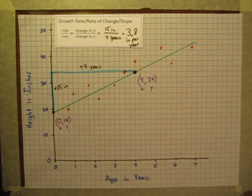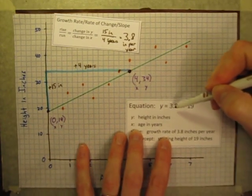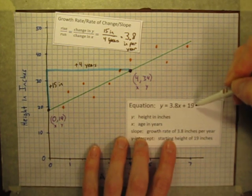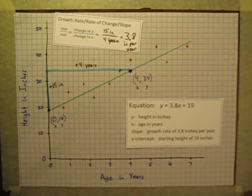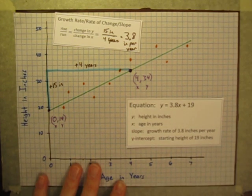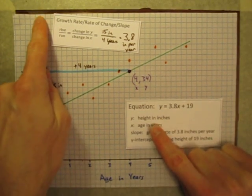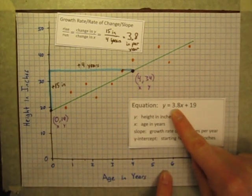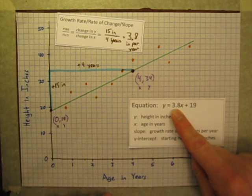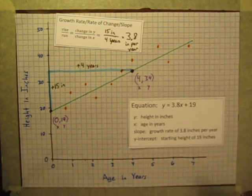And so now I'm ready to write that equation. Y is equal to 3.8 times x plus 19. This is a good point to pause for just a second to remind you what these values actually mean. The y values on the y axis are heights. The x values are ages. The 3.8 is our growth rate of inches per year. That's the rate of change or the slope. And the 19 is the beginning height.